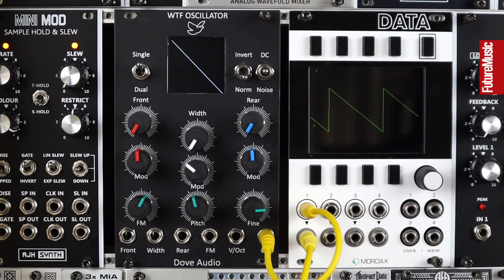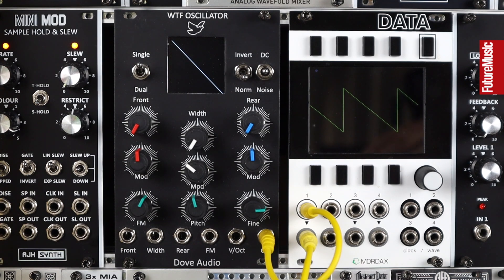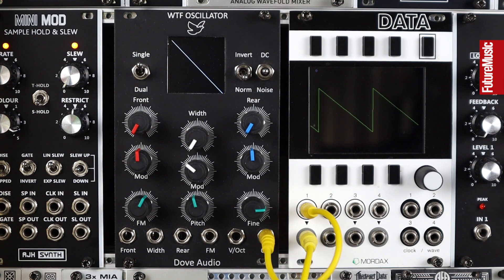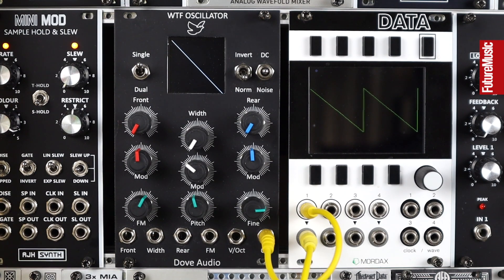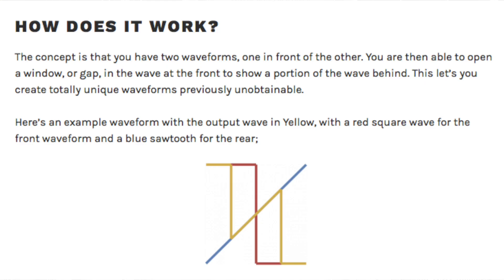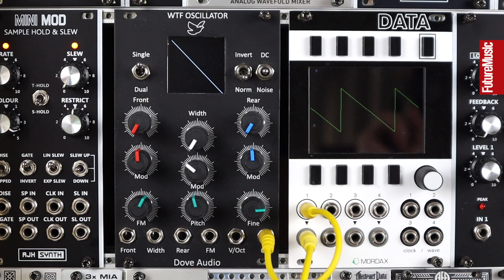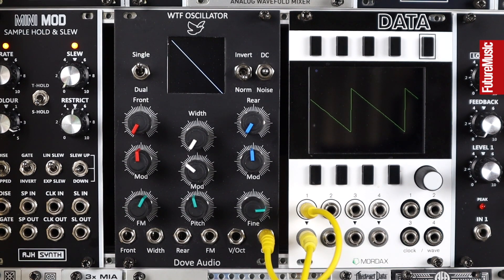The WTF stands for Window Transform Function. It's two wavetable oscillators — or one that shares the same pitch but two different wavetables — and a window that opens between them. Speaking to Paula from Dove Audio earlier in its development, she explained it as: imagine a window with two shutters. There's a rear waveform behind the shutters and a front waveform in front. As you open the shutters they part in the middle and the rear waveform comes through. Now imagine being able to modulate those shutters with CV-controlled inputs, and modulate the front and rear waves — that gives us the WTF at its core.